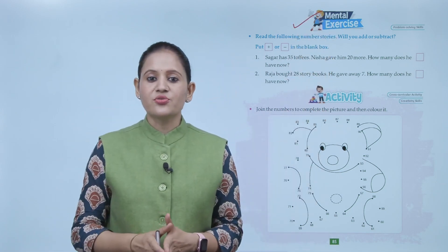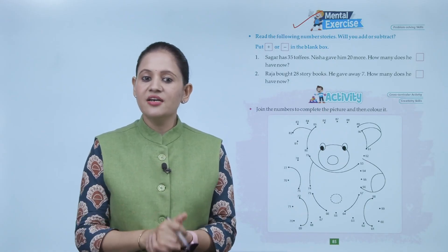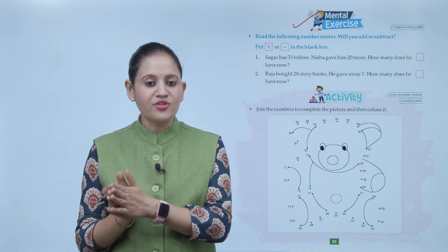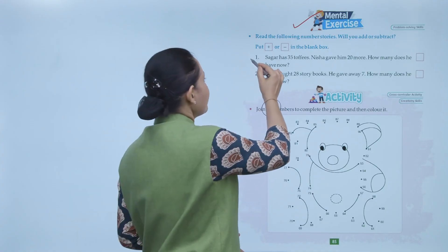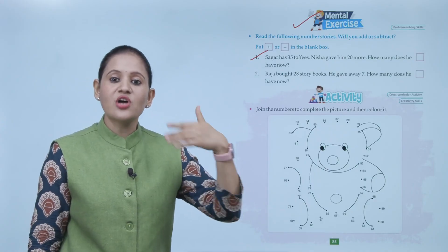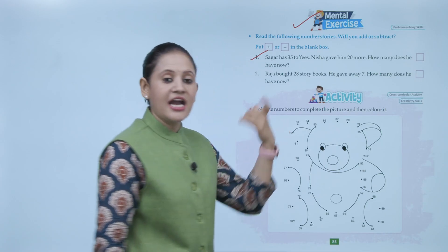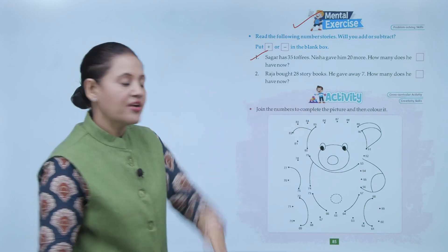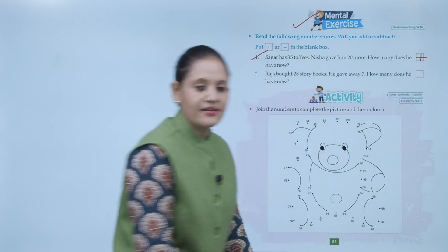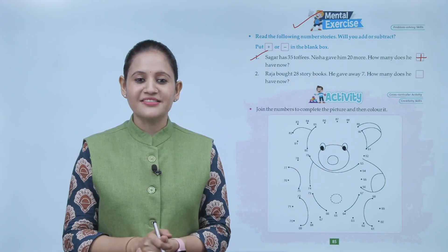Next is mental exercise. Read the following number stories — will you add or subtract? Put plus or minus in the blank box. First: Sagar has 35 toffees and Nisha gave him 20 more — how many does he have now? Here we have to add because more things are being added, so we use the plus sign. Clear? So here we end the chapter. I hope you understood it well. Now you have to practice it.